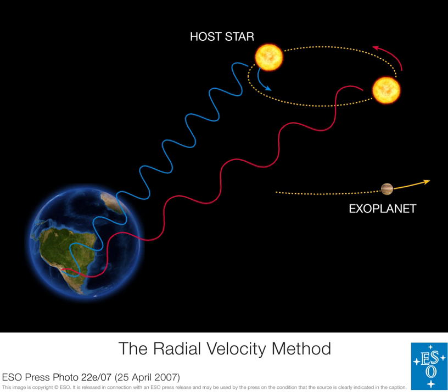The radial velocity of an object with respect to a given point is the rate of change of the distance between the object and the point. That is, the radial velocity is the component of the object's velocity that points in the direction of the radius connecting the object and the point.